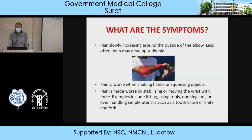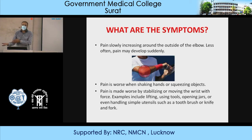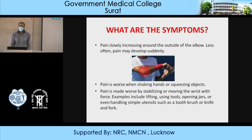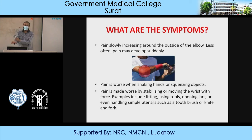Regarding symptoms: pain slowly increases around the outside of the elbow; less often, pain may develop suddenly. In tennis elbow the pain is on the outside of the elbow, while in golfer's elbow the pain is on the inside of the elbow. Pain is worse when shaking hands, squeezing objects, or stabilizing or moving the wrist with force. While playing tennis your hand is in full extension so the extensor muscles get involved, while in golf the flexor muscles get involved.